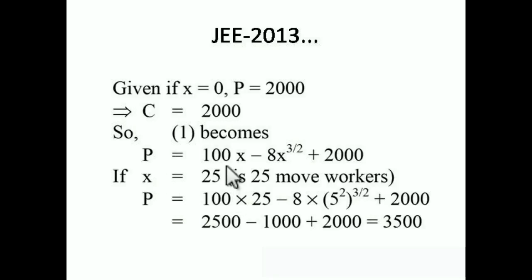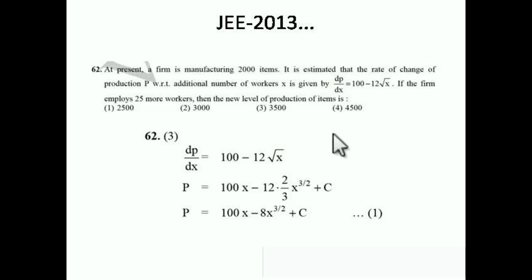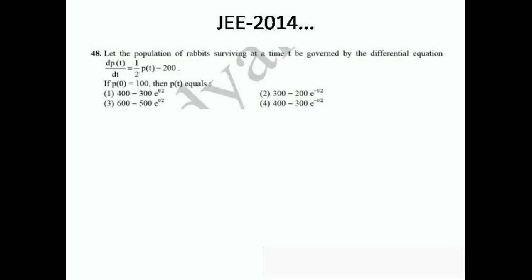Now just put x = 25: p = 100(25) − 8(25)^(3/2) + 2000. Simplifying, we get the answer 3500. So option number 3, which is 3500, is correct. Very simple — no need for any particular formula, just simple logic.